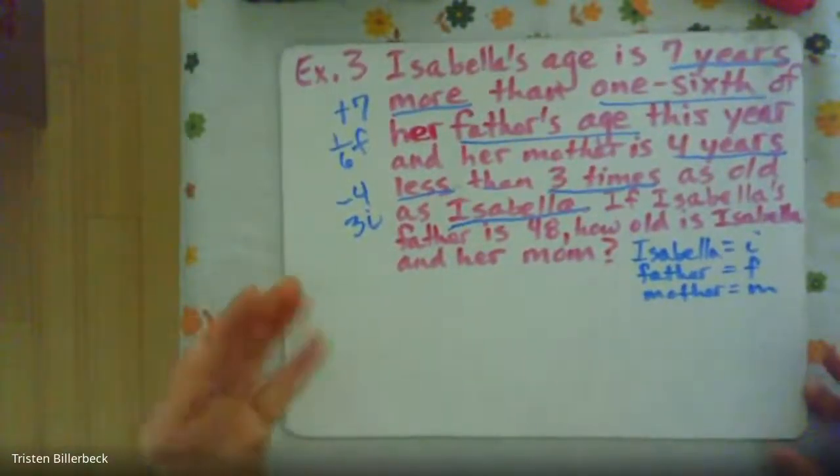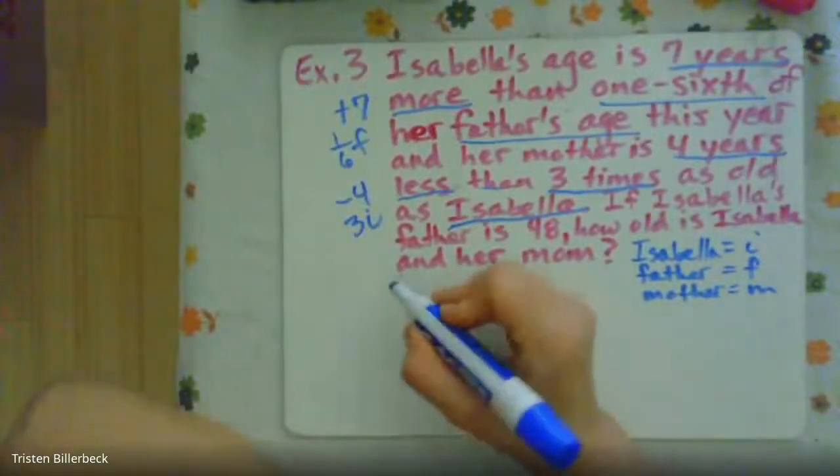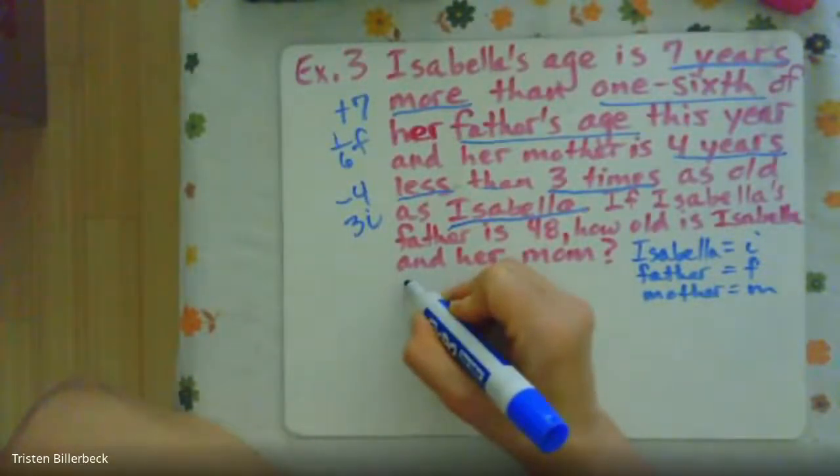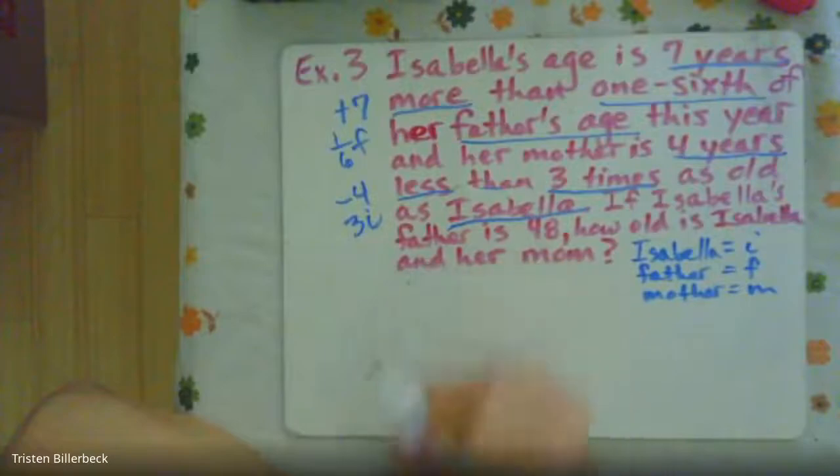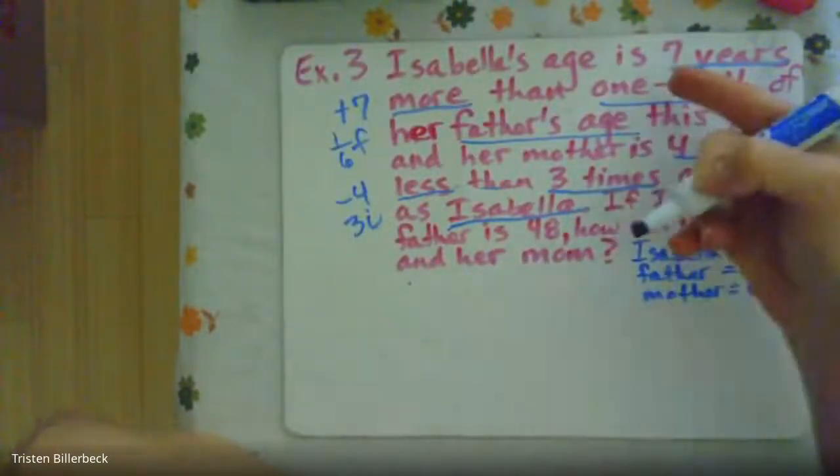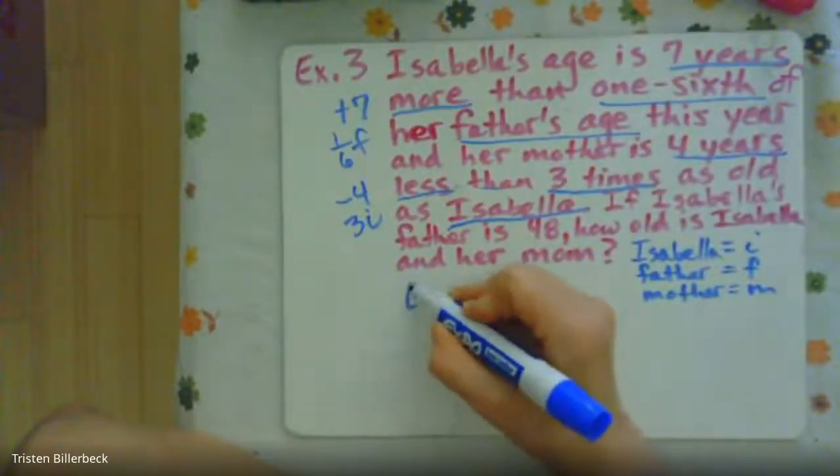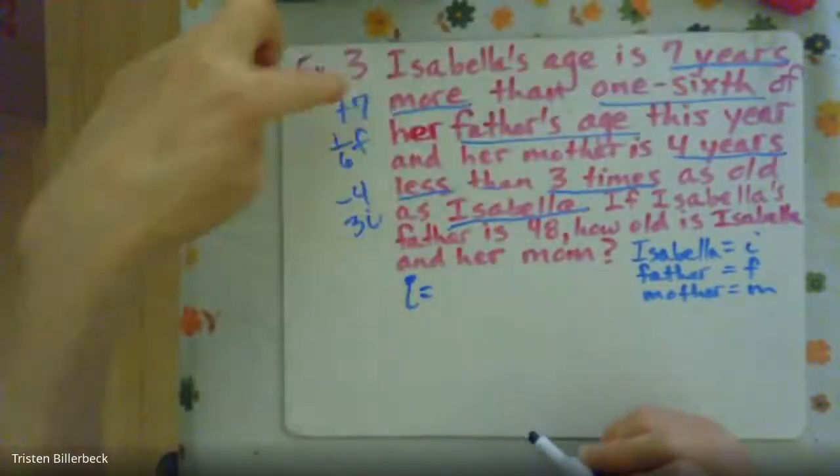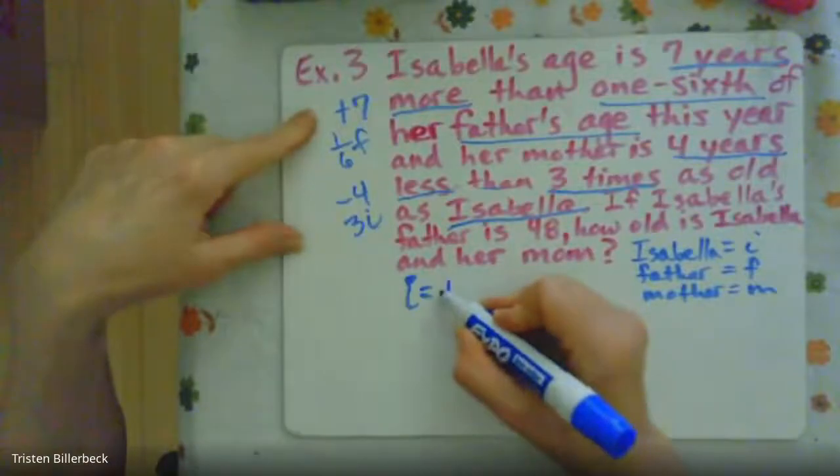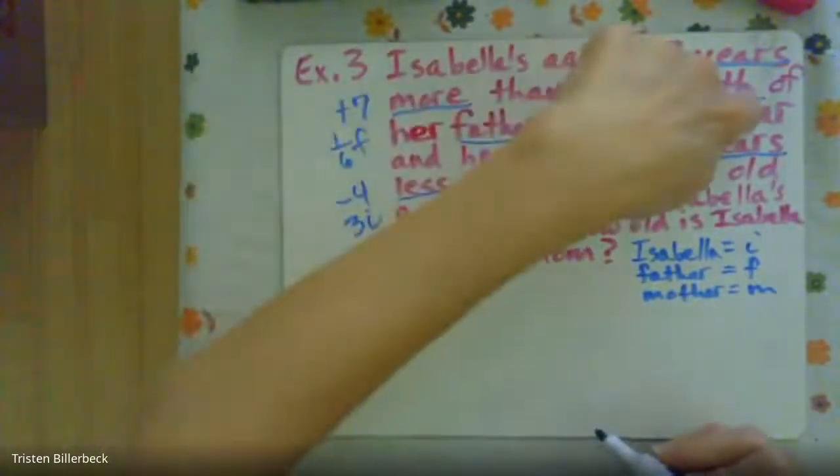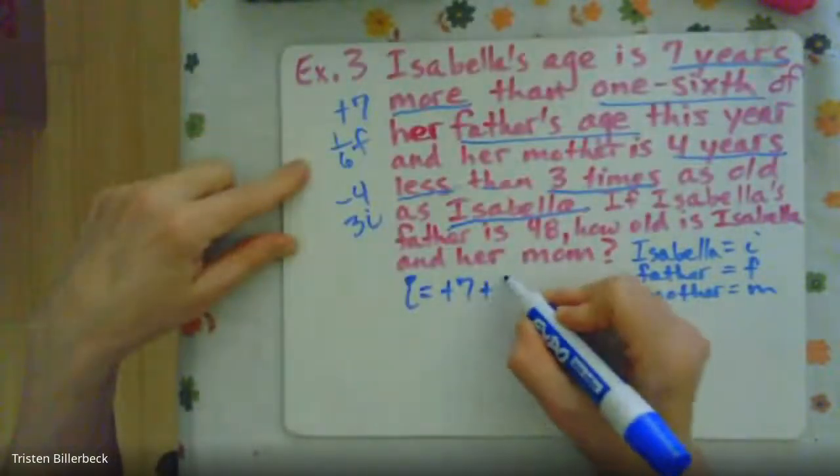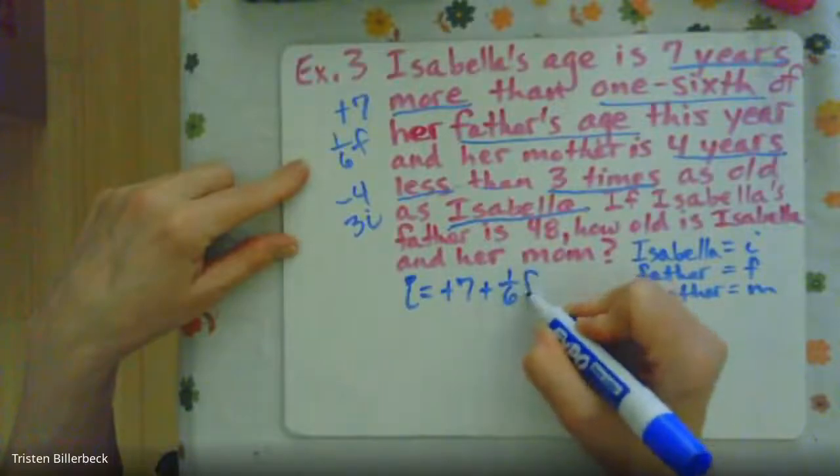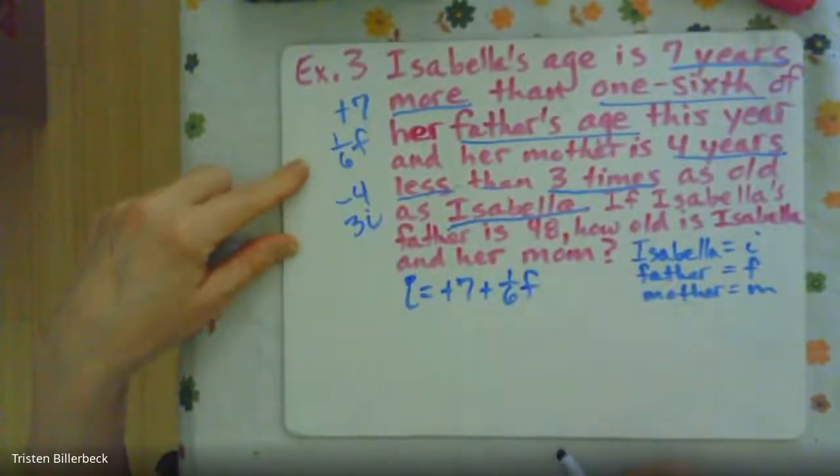So if we want to write an equation of the father's age, so actually let's write it in terms of Isabella's age. So Isabella is seven years more plus seven than one-sixth of her father's age.